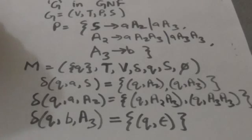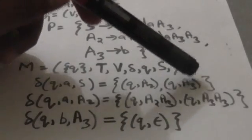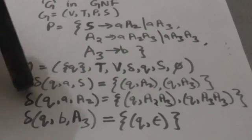For this production we will add a transition in pushdown automata M: delta(Q, a, S) = (Q, A2). For the production S derives a·A3, we will add a transition delta(Q, a, S) = (Q, A3) in pushdown automata M. And for the production A2 derives a·A2A3, we will add a transition delta(Q, a, A2) = (Q, A2A3) in pushdown automata M.